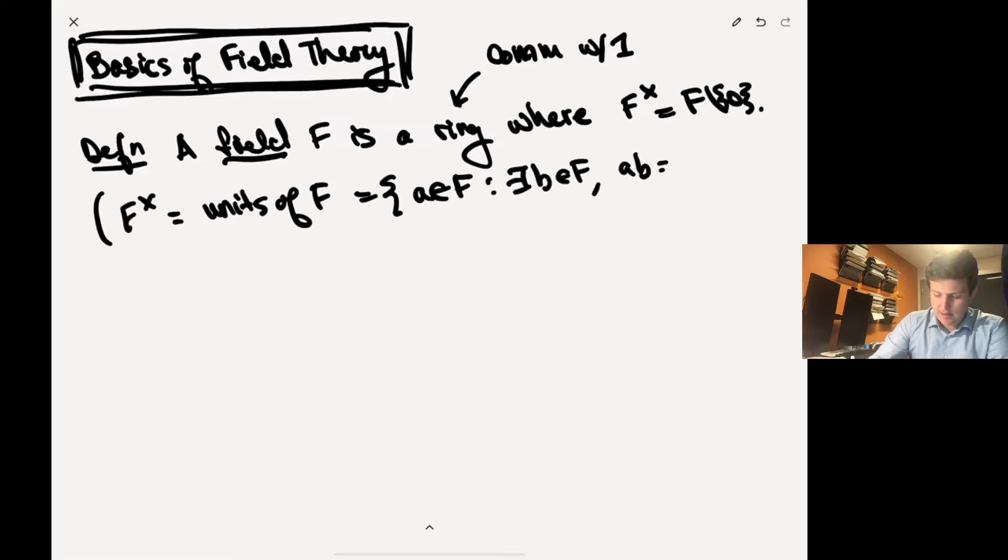So there exists some b in F such that ab is equal to one. Alright, so these are the units and that's the symbol for the units. So a field is a ring where everything has a multiplicative inverse.